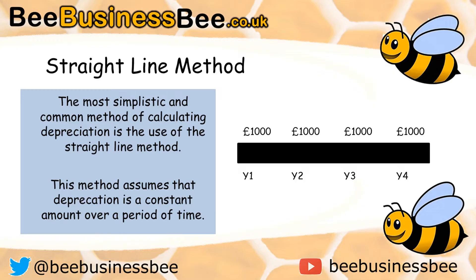If you look to the right hand side of your screen, you'll see that I've drawn a straight line where I've got year one, year two, year three, and year four. By using this method, we take £1,000 worth of depreciation off each year. Fairly straightforward — I'll explain how we come about doing that in a moment.